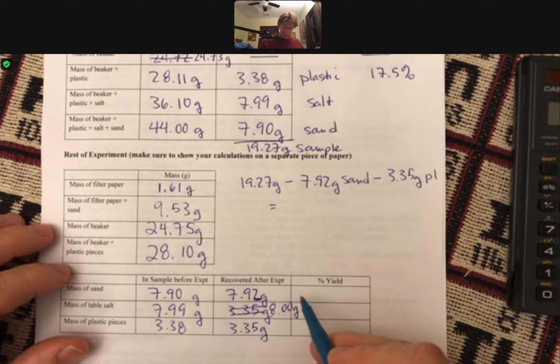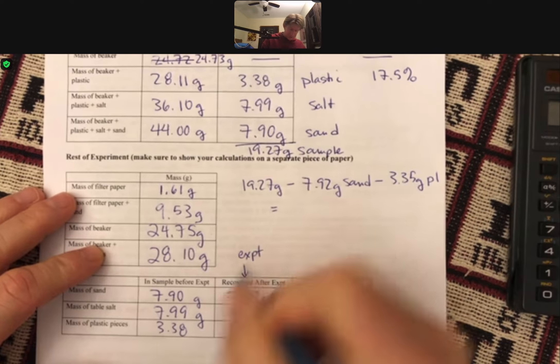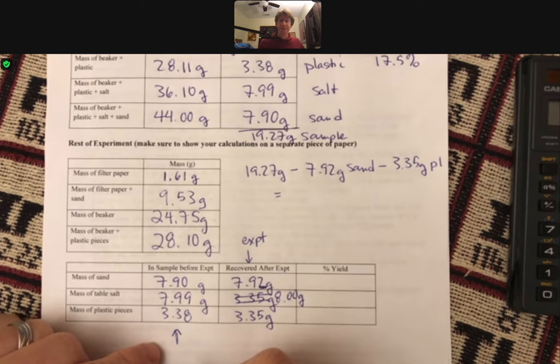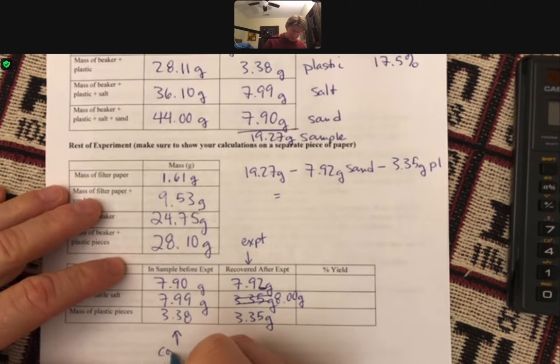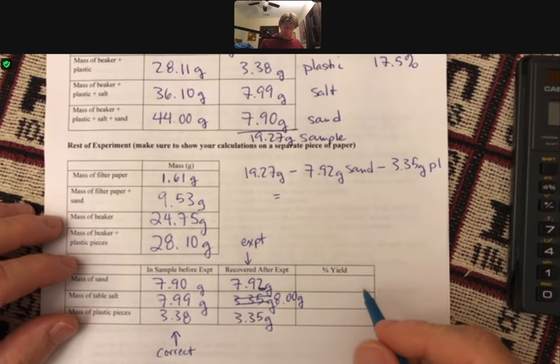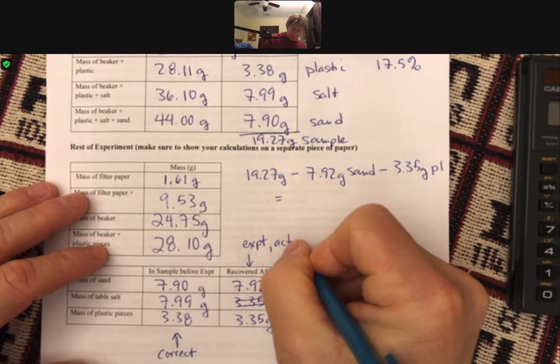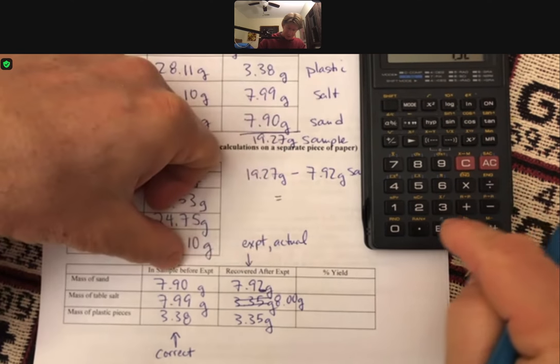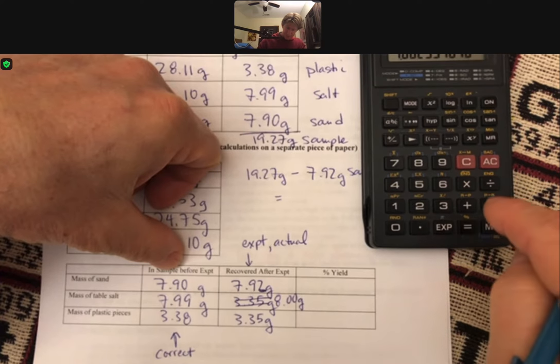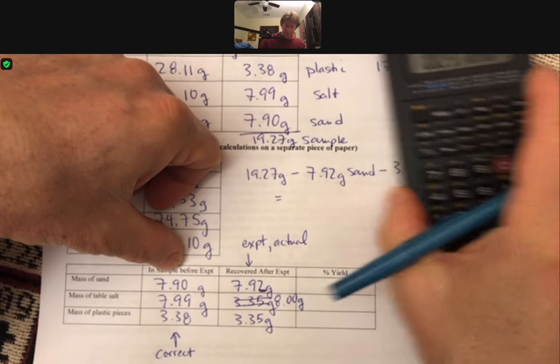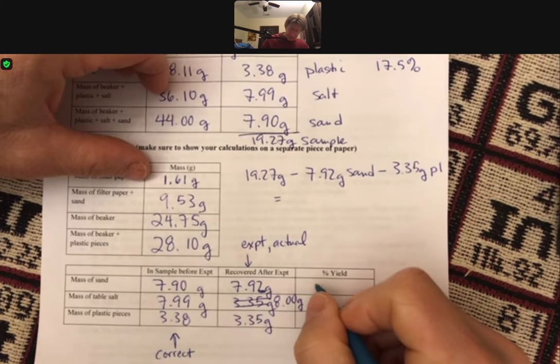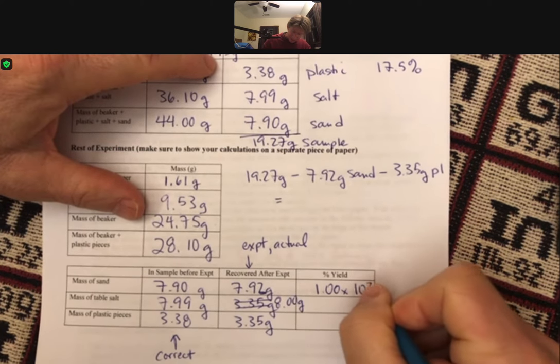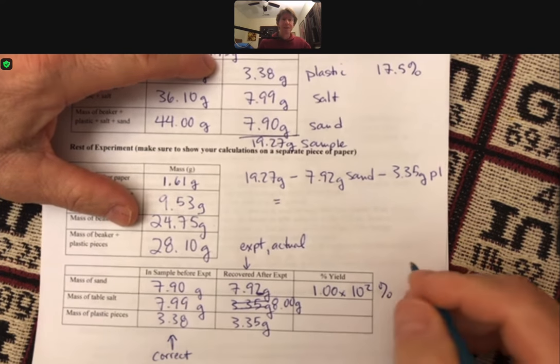Our percent yield is going to be our experimental result divided by our correct result. And our correct result this time is what we started with. We know that's correct because we weighed it out. So this is going to be correct. So our percent yield is going to be experiment or actual divided by correct times 100%. So 7.92 divided by 7.9 times 100. I get 100.3%. Or because it's 3 sig figs, it's going to be 100%. And to make it clear that we have 3 sig figs in this number, it's going to be 1.00 times 10 to the second percent, which is 100% with 3 sig figs.